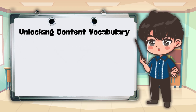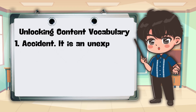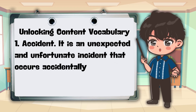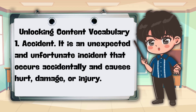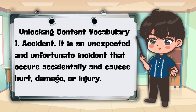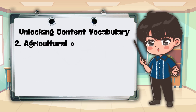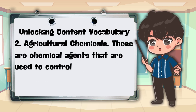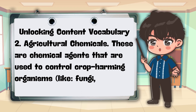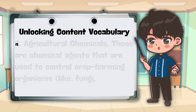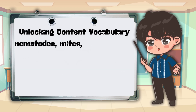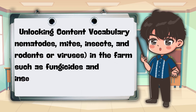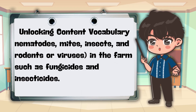1. Accident — It is an unexpected and unfortunate incident that occurs accidentally and causes hurt, damage, or injury. 2. Agricultural Chemicals — These are chemical agents used to control crop-harming organisms like fungi, nematodes, mites, insects, and rodents or viruses in the farm, such as fungicides and insecticides.